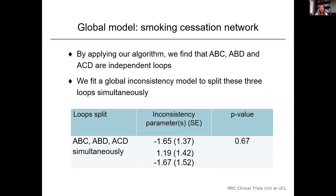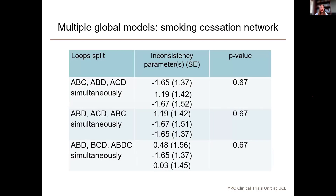The global model shows no evidence of inconsistency across the network. The set of independent loops isn't unique — we can find independent loops by hand by taking away one edge at a time and seeing which loop gets broken. If we take away edges in a different order, we find different sets of independent loops. I've shown two more examples of fitting a global model to different sets of independent loops. Jointly splitting any set of independent loops produces the same model, so the test for global inconsistency gives the same results in each case.